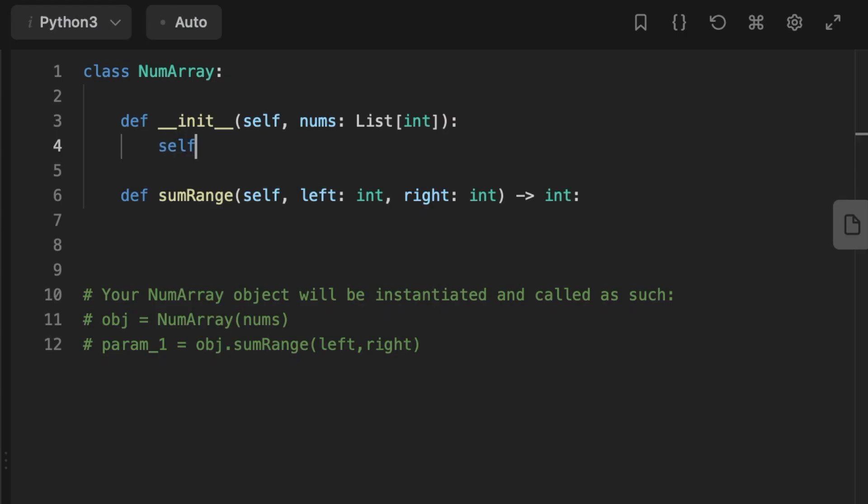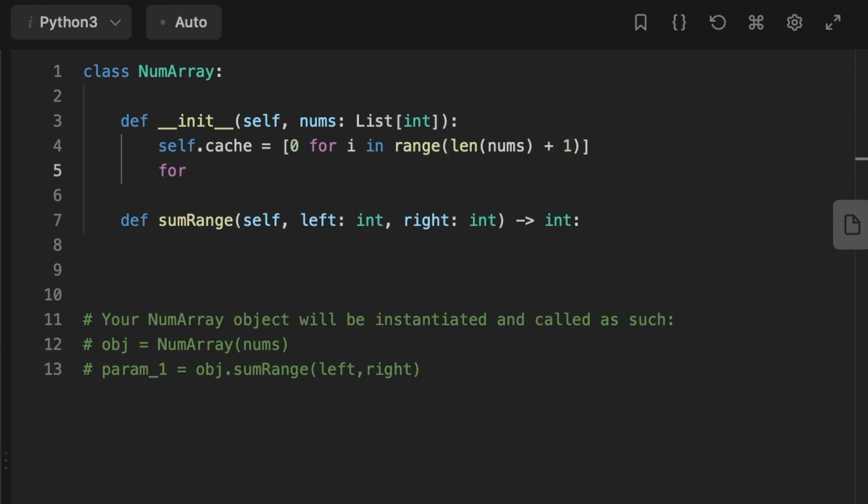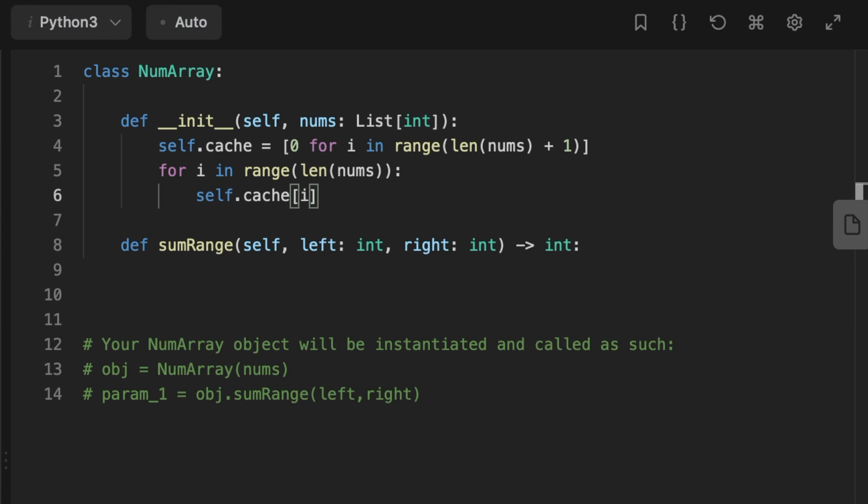Let's jump to coding the solution. We start by initializing a cache array of size len(nums) + 1. Then we loop over the input array nums, calculate the prefix sum, and store it in the cache array. That's the __init__ method.